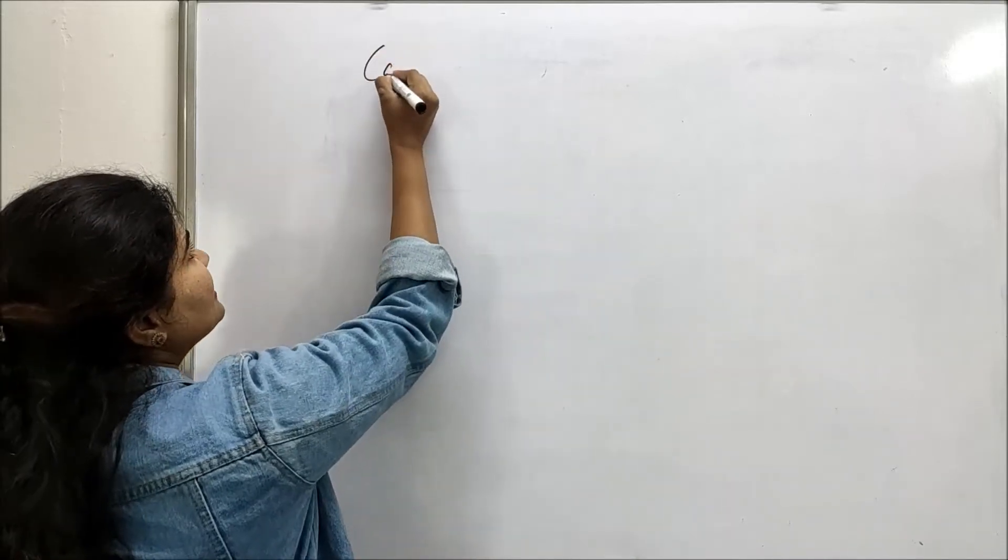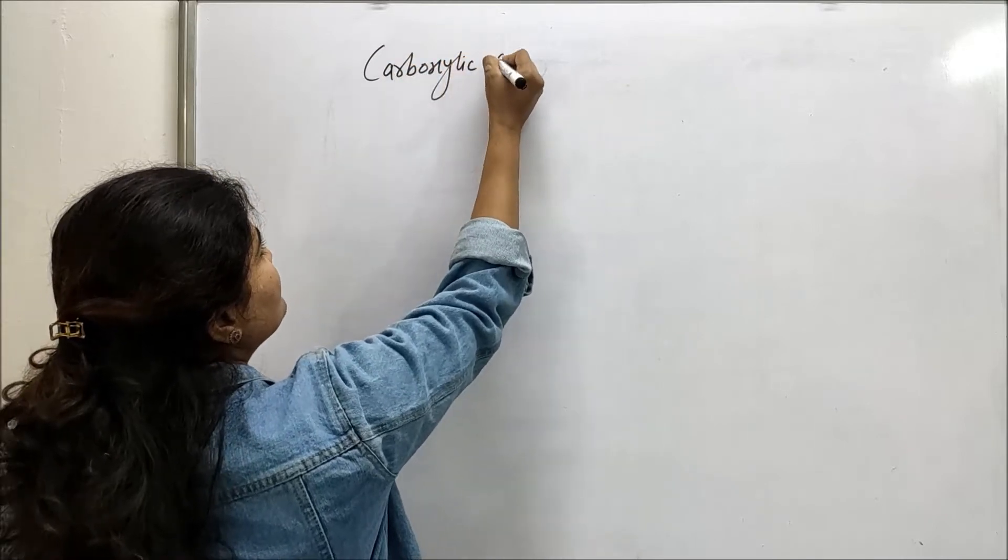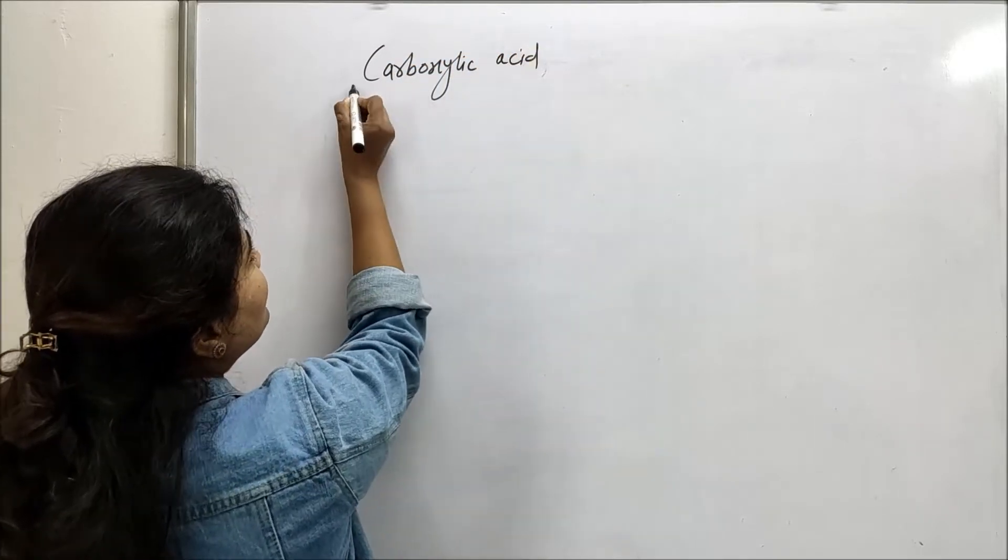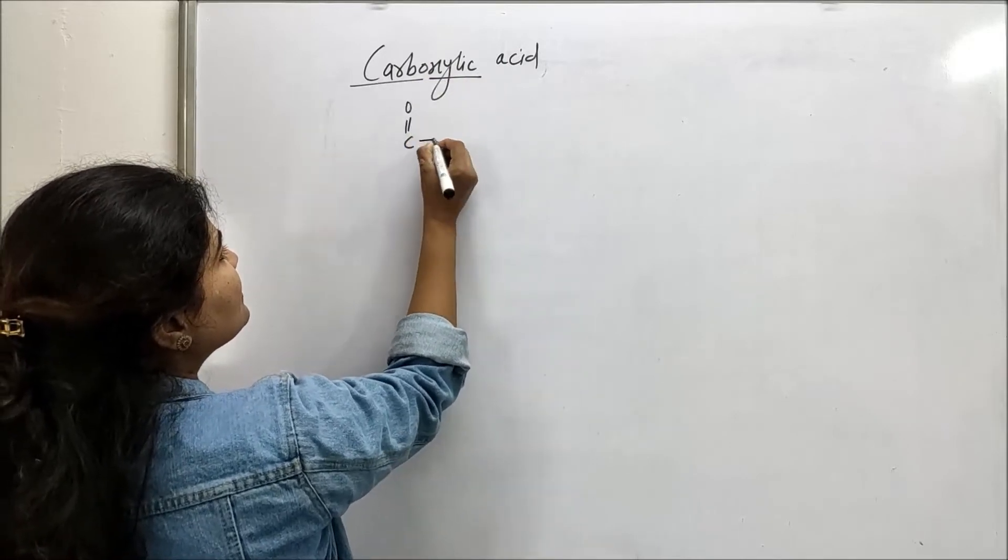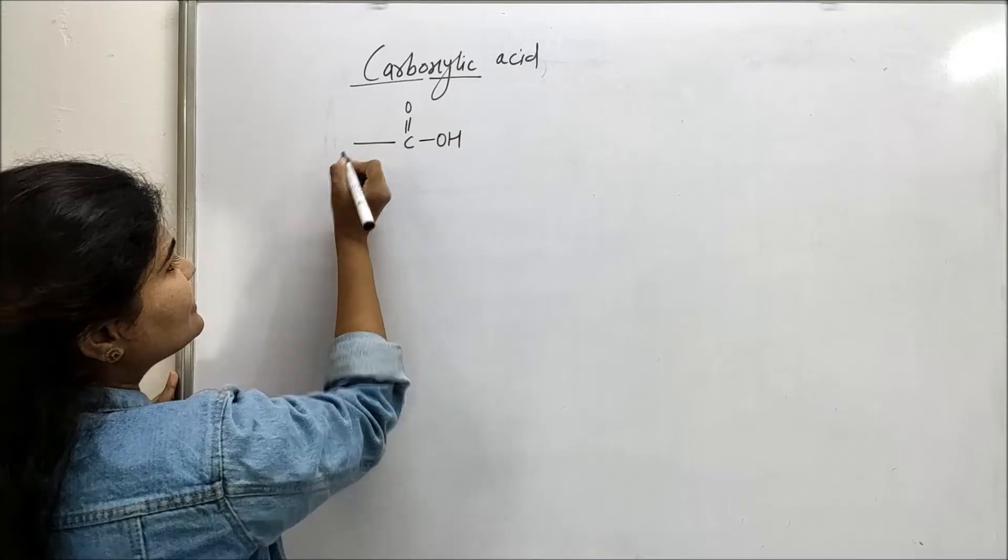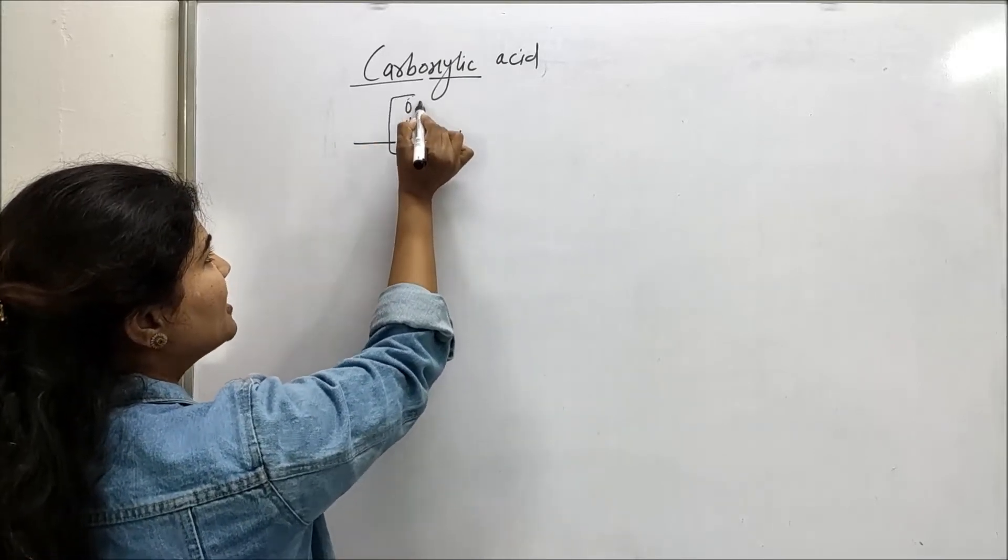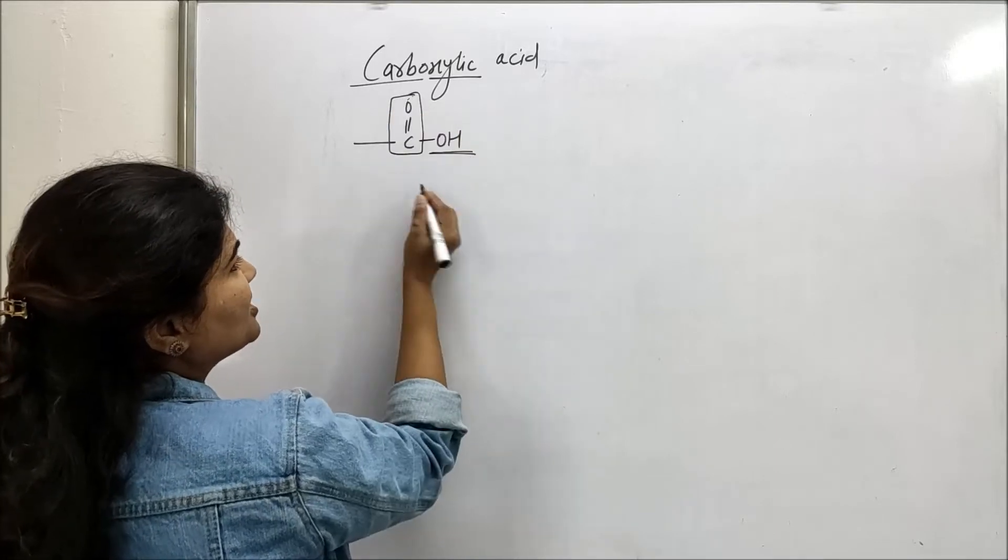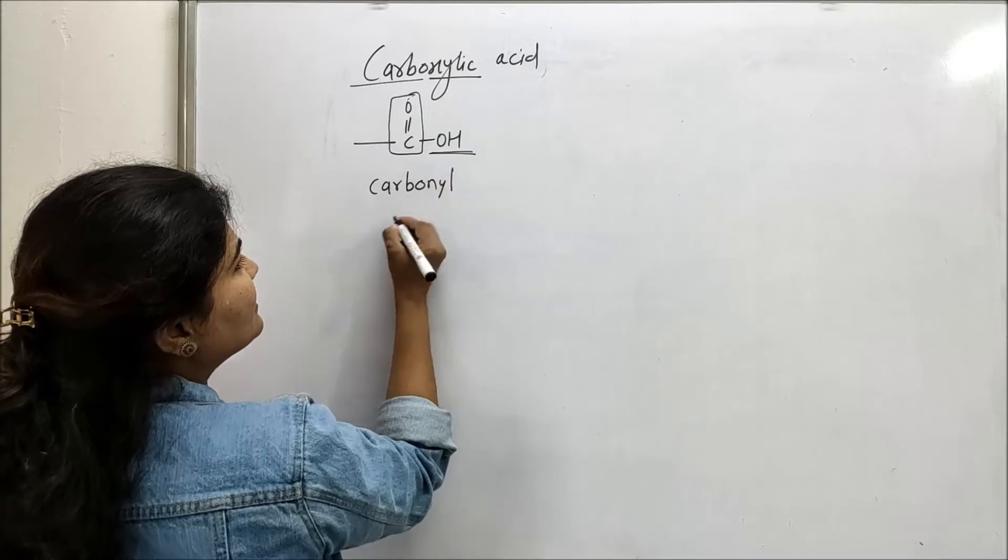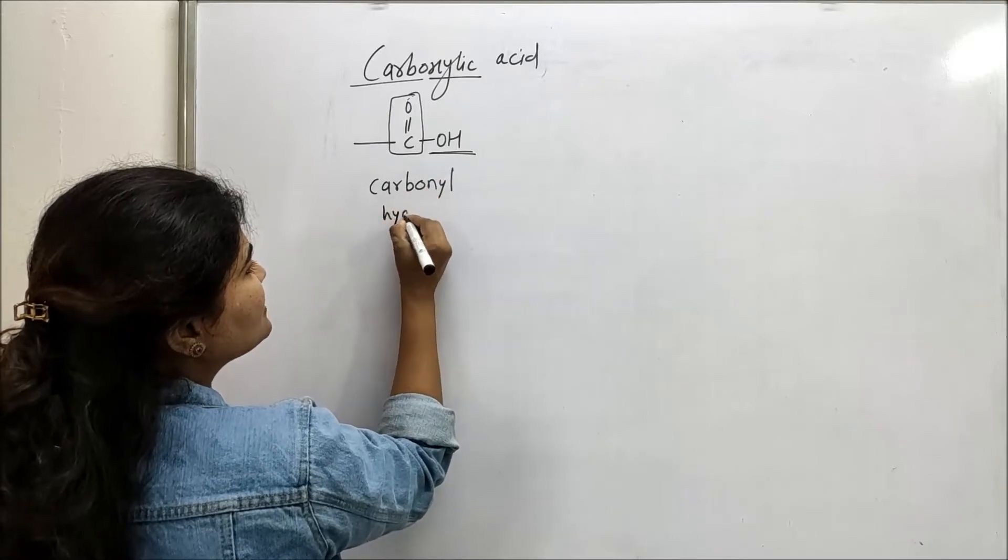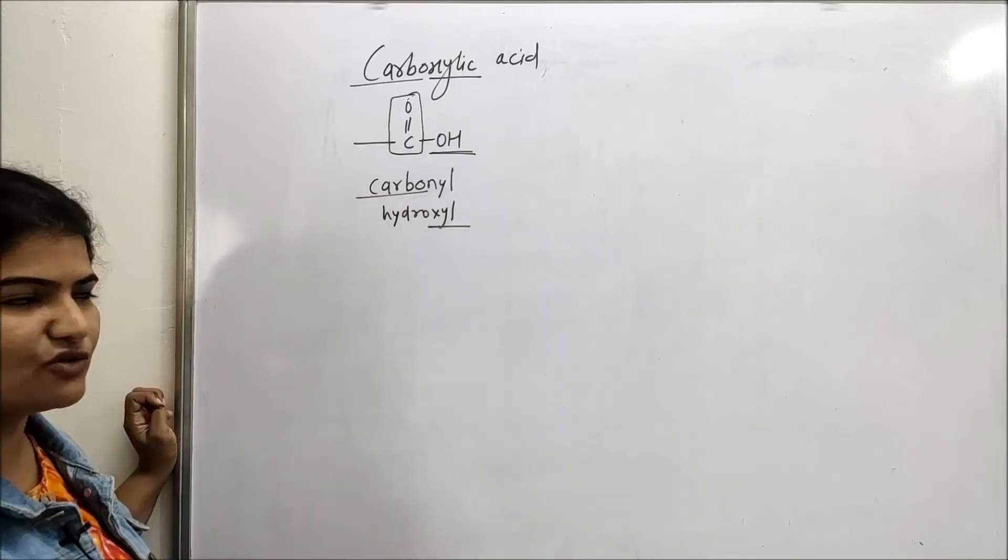Now you know for carboxylic acids, carboxylic as the name suggests, carbonyl and hydroxyl are the two groups present in the functional group of carboxylic acid. This is the functional group for carboxylic acid. There is carbonyl group and then there is hydroxyl group. So when you combine carbonyl with hydroxyl, you get carboxyl functional group.